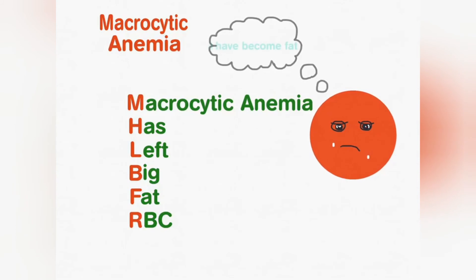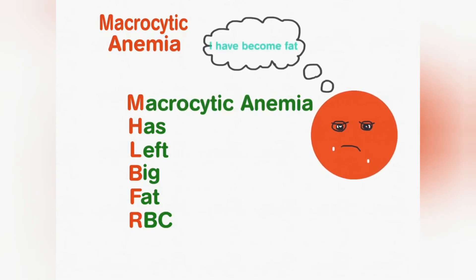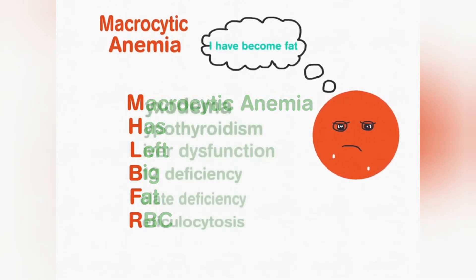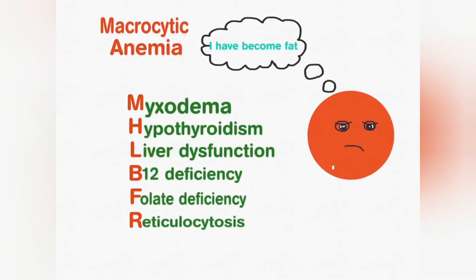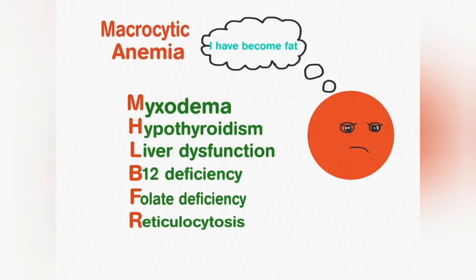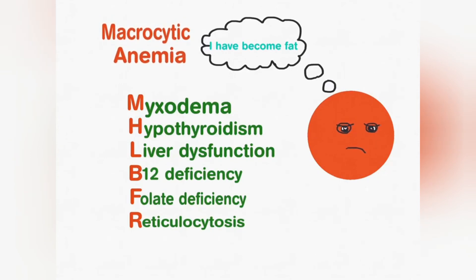Macrocytic anemia has large fat RBCs. Starting with the initials, we have myxedema, hypothyroidism, liver dysfunction, B12 deficiency, folate deficiency, and reticulocytosis.